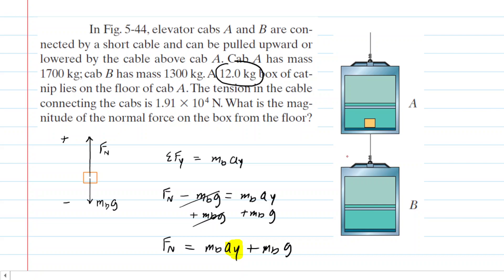So if we can actually figure out the acceleration of cab B, then we would also know the acceleration of the box of catnip. So that would be an interesting strategy to solving this question.